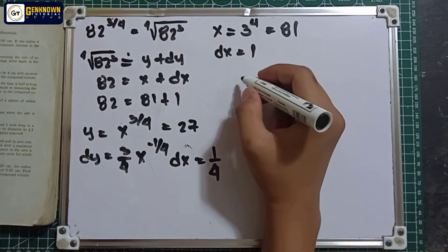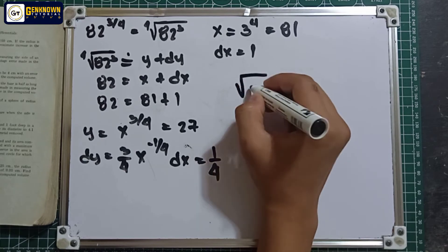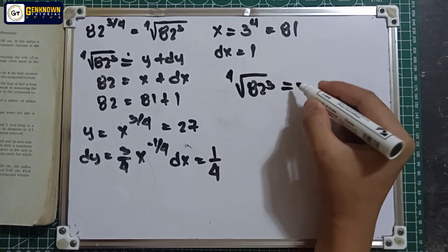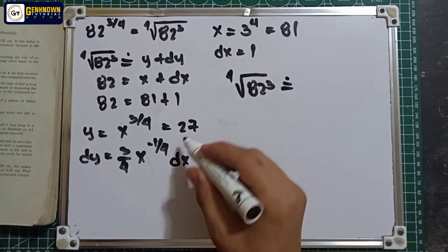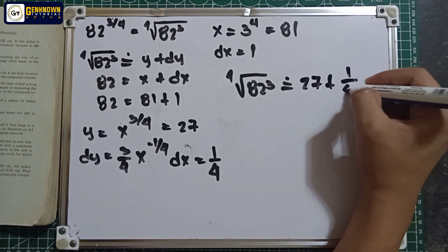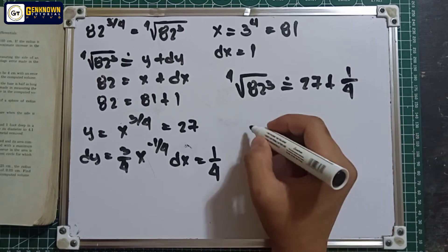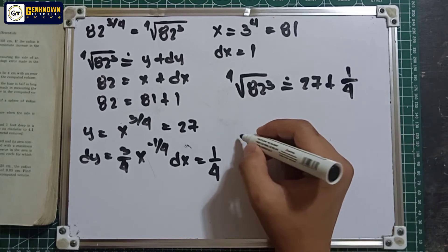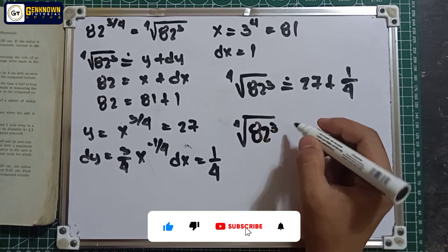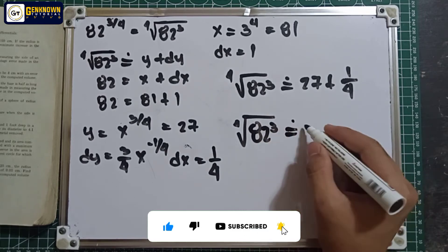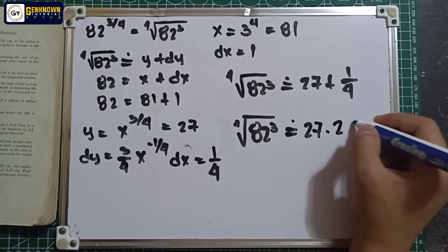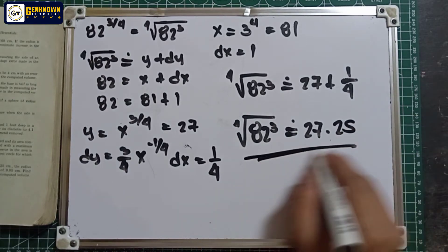So totally, the fourth root of 82 raised to 3 is approximately equal to y plus dy: 27 plus 1/4, which equals 27.25. This is the answer for number 3.